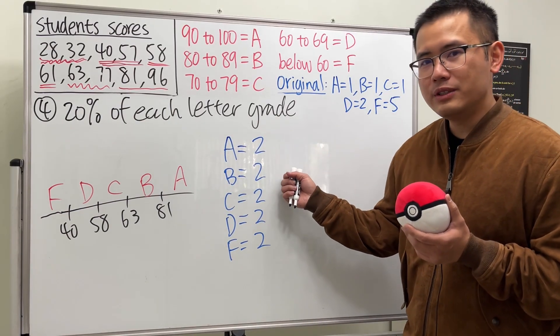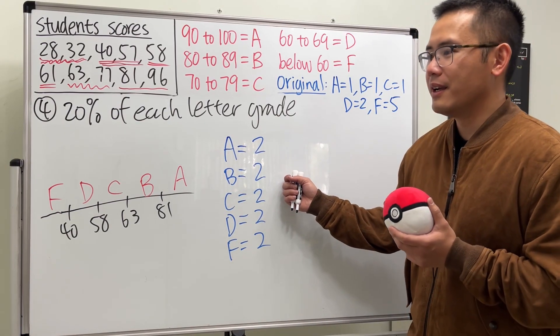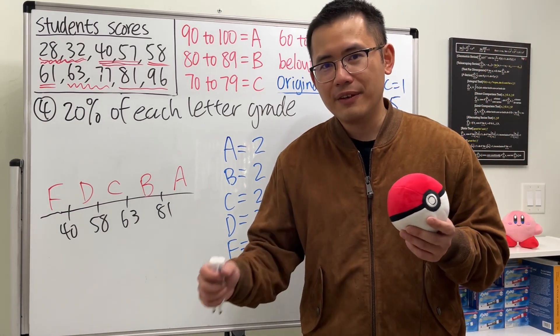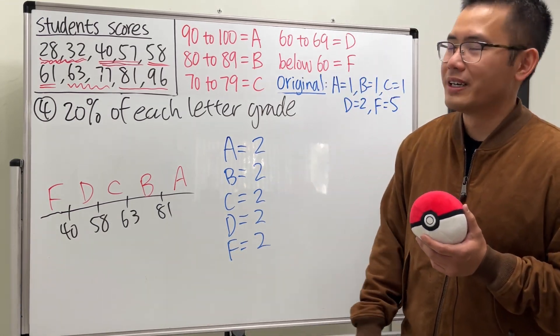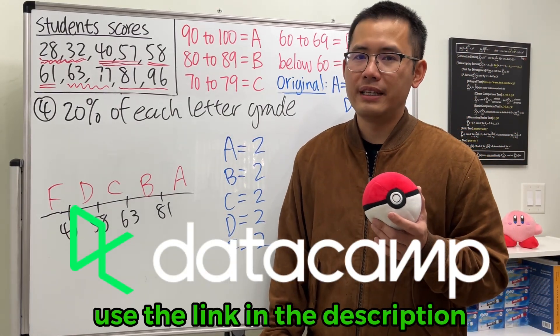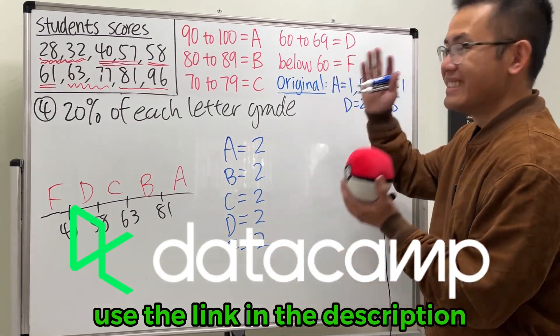I would prefer to do either this, which I know a lot of students wouldn't like it, or I would just do the second way, which I would just add 15 points to everybody's score. So let me know what you guys think. And be sure you guys check out Datacamp if you want to learn more about data science. And as always, that's it.